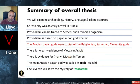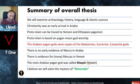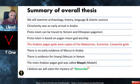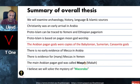There is no early evidence of Mecca in Arabia, and there is evidence for many Meccas in Yemen. The main Arabian pagan god was called Makkah — you might have heard of a very popular city in Arabia called Makkah. We will also look at the mystery of Makkah-Raba, the location that Muslims like to claim was the earliest mention of Mecca in the second century.